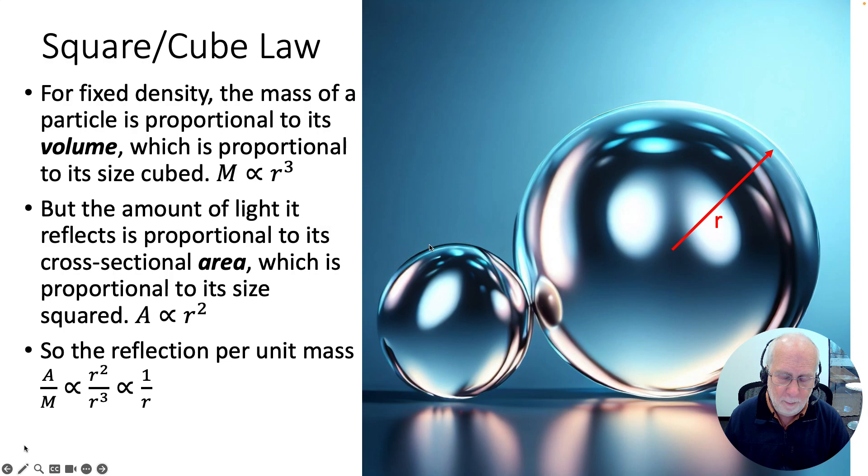So that's the mass, but the amount of light it blocks is going to be proportional to its area, its cross-sectional area. An area is going to be proportional to size squared, whether it's πr² or r² or 4πr², it's going to be some function of r². So what that means is, the amount of light reflected per unit mass, that's the area of reflection divided by the mass, it's going to be proportional to r² over r³, i.e. 1 over r. So what this is telling us is that small particles do more blocking light than big particles for the same mass.